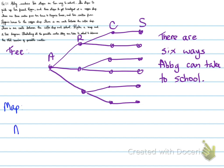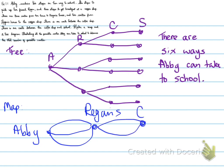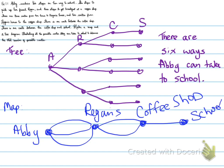Now if we're drawing a map, essentially what we're doing is going from Abby's house. We're going to draw three ways to get to Reagan's house — one, two, three. Now we're at Reagan's house. Once Abby picks up Reagan, she goes to the coffee shop, so there are two routes to get to the coffee shop. Then from the coffee shop, there's only one route to get to school. That is how we would draw the map.